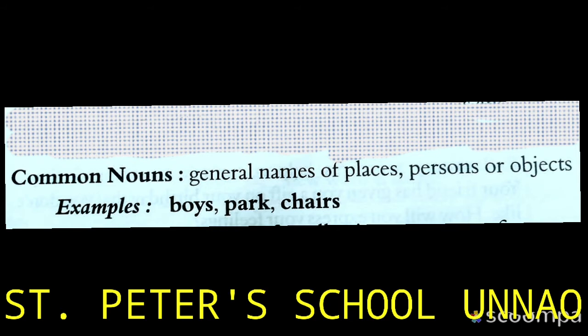Common noun means a general name — like 'girl'. There is not only one girl; many girls can come. If I say 'a girl will come here', I have not called anyone by name, so all girls could come. Words like girl, chair, and table are common nouns.